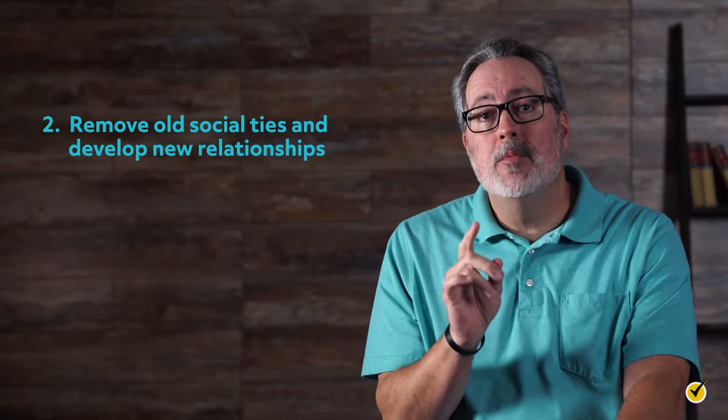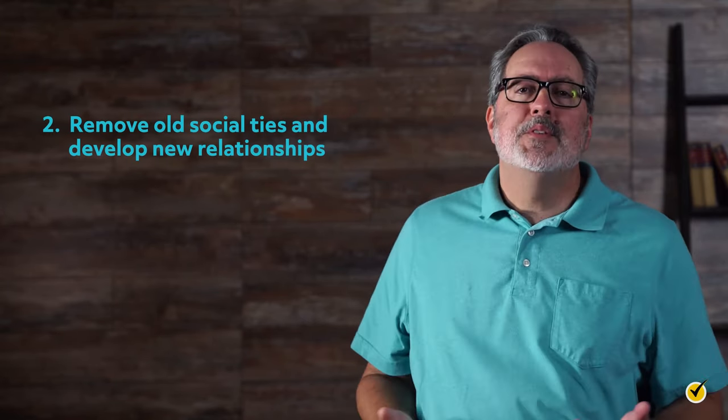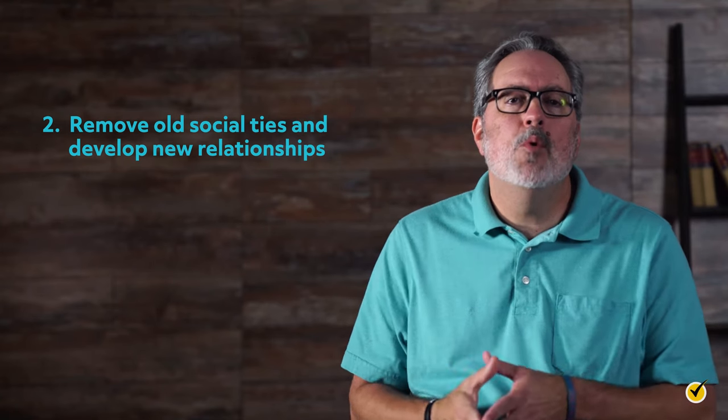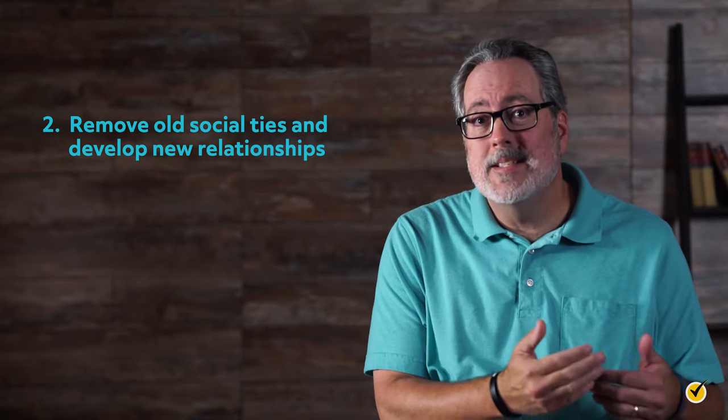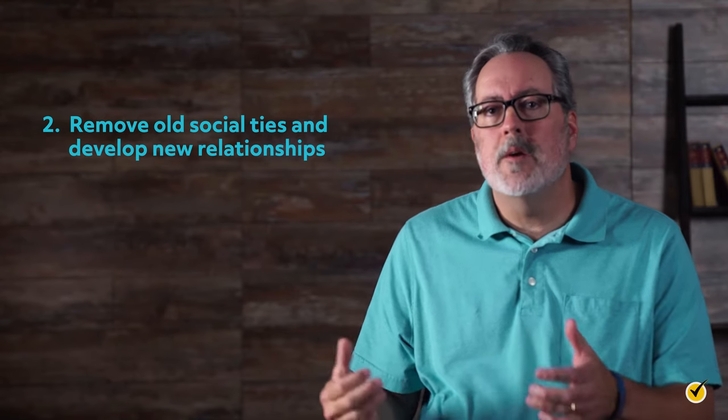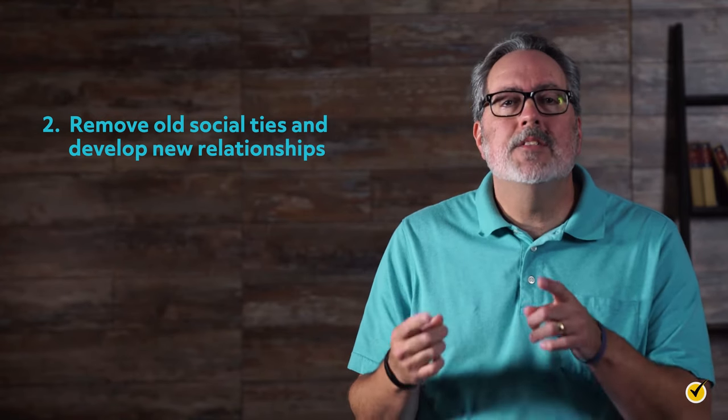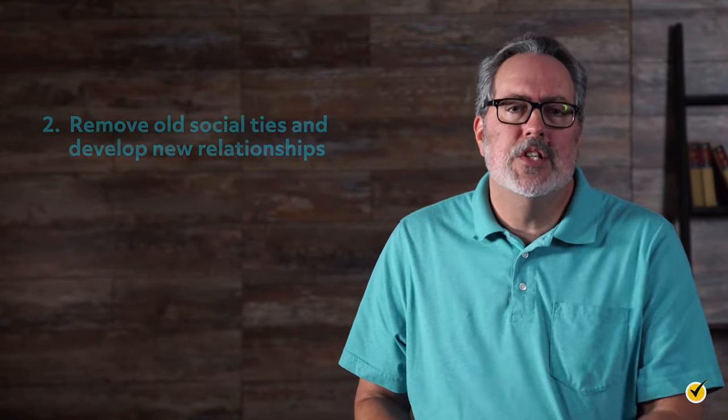Remove old social ties and develop new relationships. This step in the theory says that when people move from their existing circle of acquaintances and pursue new relationships with those who share the same interests, the effects of lasting change can be better achieved.